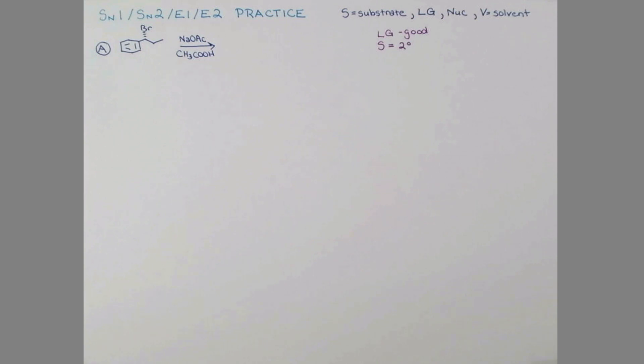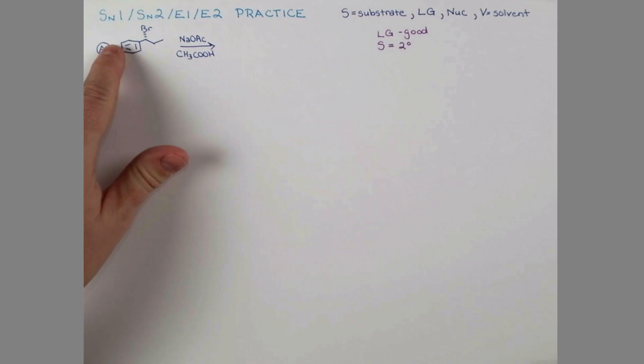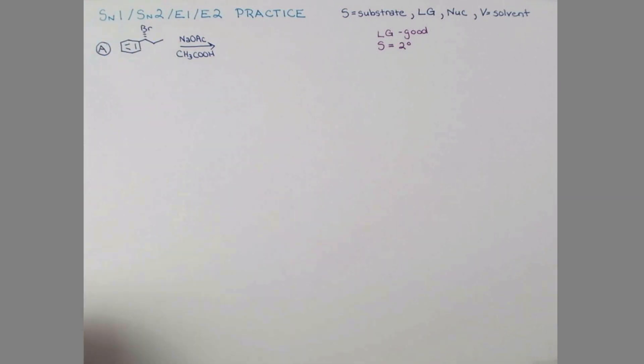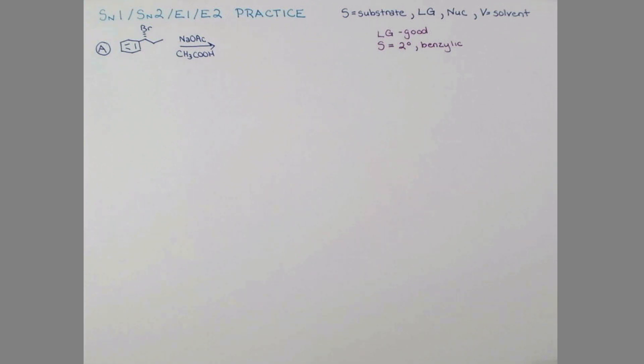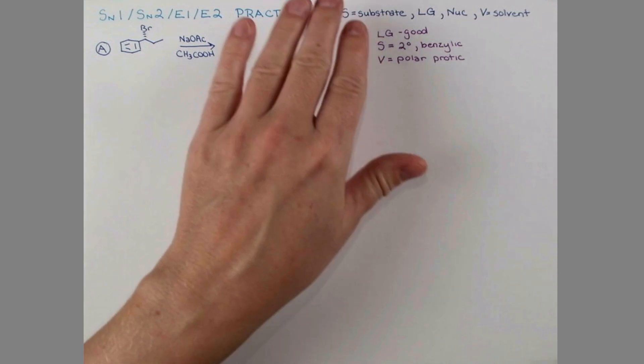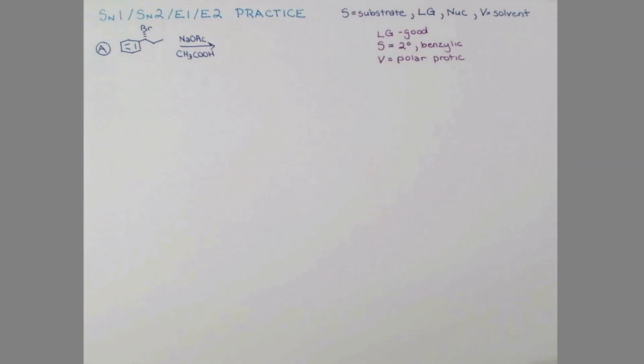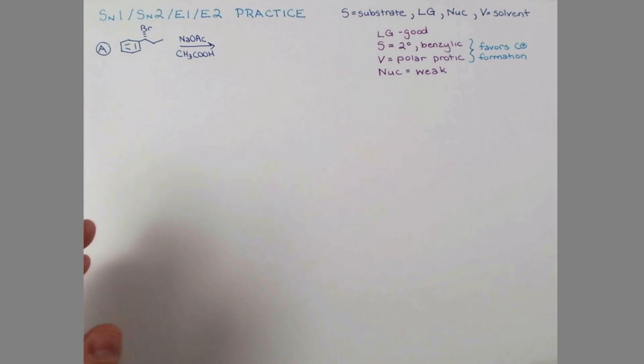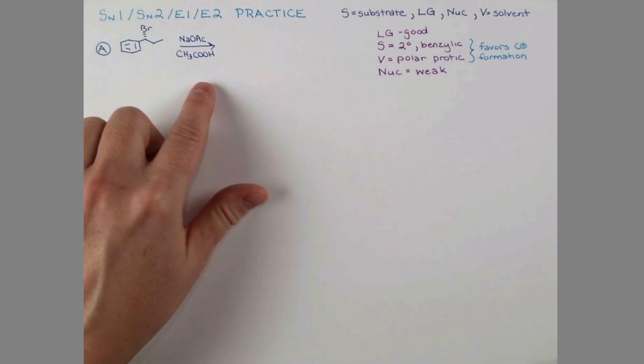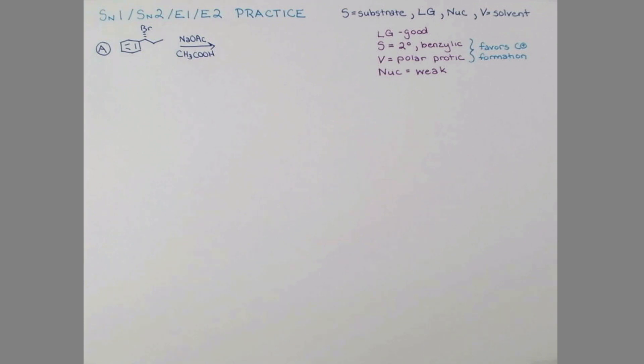This is a secondary bromide, so secondary substrates can undergo SN1, SN2, E1, or E2 reactions under different conditions. These are the most challenging substrates to deal with. We can see this phenyl ring here - this is actually benzylic. If this substrate forms a carbocation, we have extra stabilization by resonance with the ring. Once I notice this is secondary and benzylic, I start thinking ionization might be likely. The solvent is acetic acid, which is a polar protic solvent. These two factors have me thinking carbocation formation is getting even more likely.